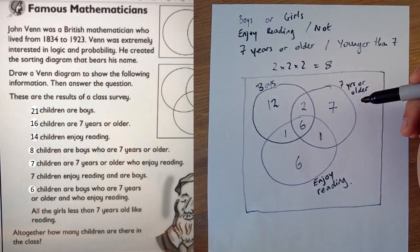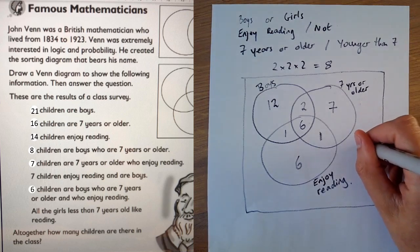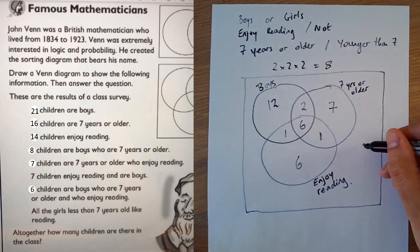So we've filled it all in now. And the question is altogether how many children are there in the class? Well you could just add these up and that will give you the answer.